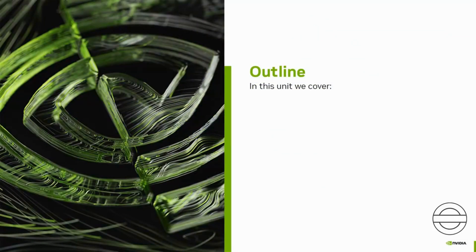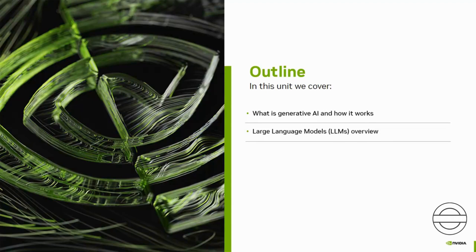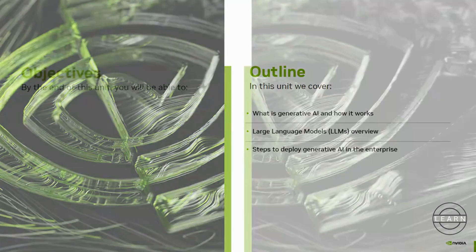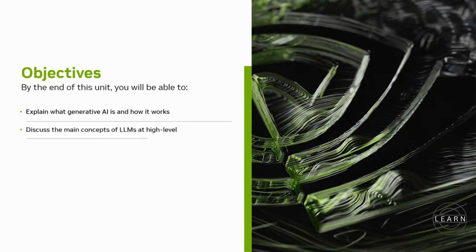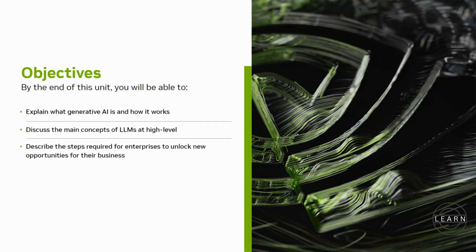Here's the outline for this unit. Unit 3 is aimed at understanding what Generative AI is, how the technology works, an overview of Large Language Models, or LLMs, and the steps required to deploy Generative AI solutions in the enterprise. By the end of this unit, you'll be able to explain what Generative AI is and how the technology works, discuss the main concepts of Large Language Models, and describe the steps required for enterprises to unlock new opportunities for their business.